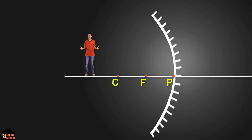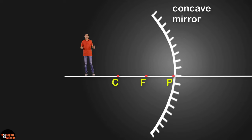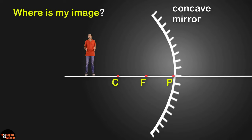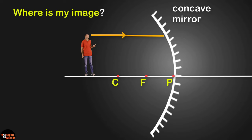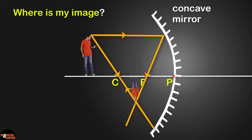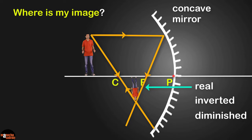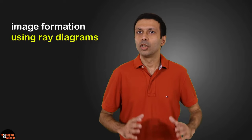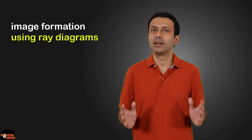Hi friends, here I am on the principal axis of a concave mirror. Can you predict where my image will be formed and the properties of the image? One method is to use the light ray rules and draw a ray diagram like this. As you can see, this is the position of my image and it's a real, inverted and diminished image. I discussed this method of image formation using ray diagrams in an earlier video.